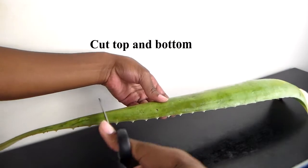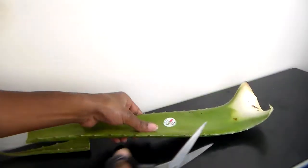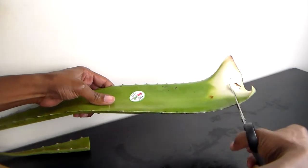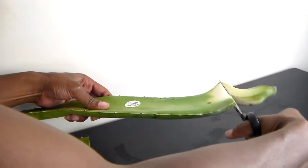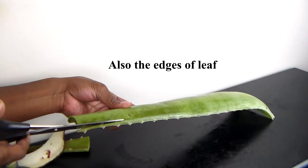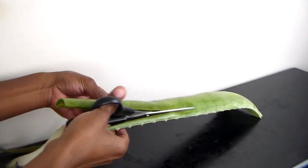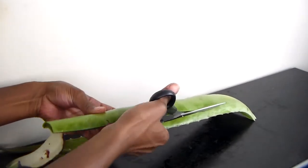First I'm going to cut the top and the bottom of the leaf, and then I'm also going to cut around the edges to get rid of all of the spikes so that my next step is a little bit more smooth and easy.